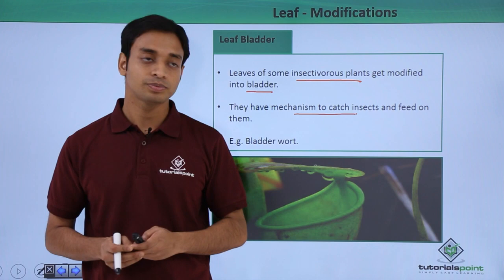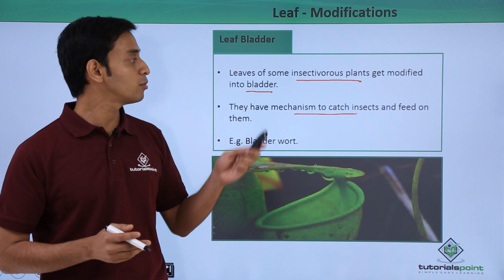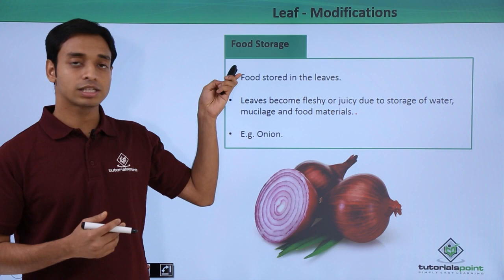In this video we have talked about the different modifications of leaves. We discussed the leaf bladder, the phyllode, storage of food inside the leaves, leaf spines, and leaf tendrils. I hope you have understood — please like this video, thank you.